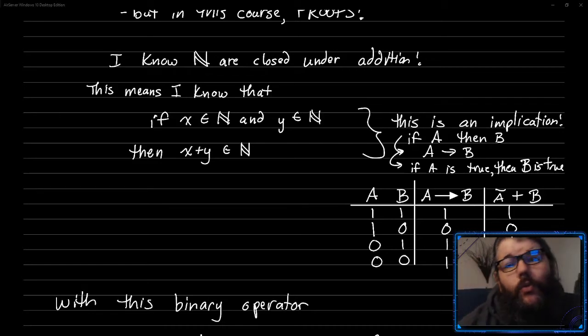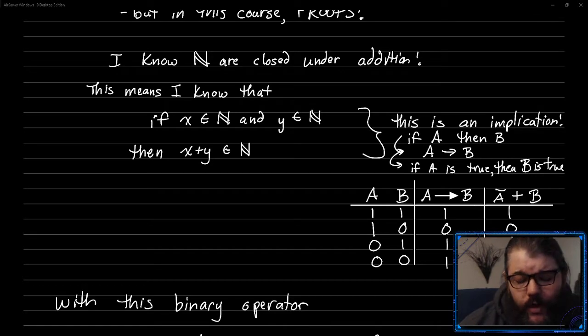Alright everybody, we're back. We're going to talk about proofs using closure a little bit. We're going to start with this thing that we learned from last video, which is that natural numbers—numbers like 1, 2, 3, 4, 5, 6, positive integers—are closed under addition. If I add any two positive integers, I get a positive integer, so we say they're closed under addition.